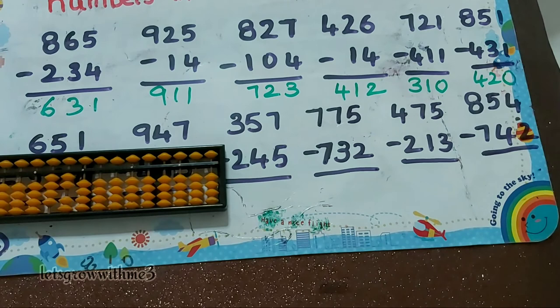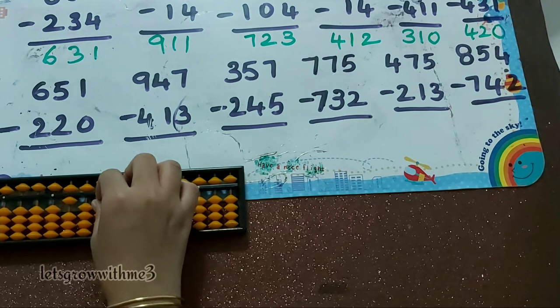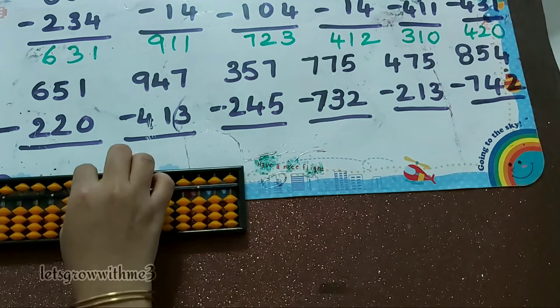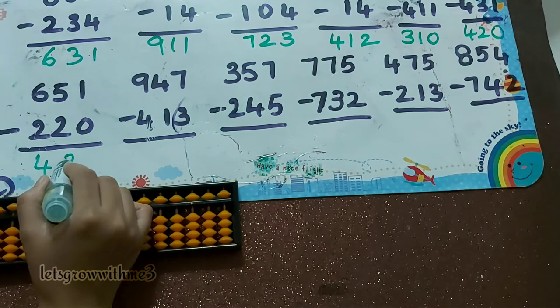Next one, 651 minus 230: minus 2, minus 5 plus 3. Minus 5 plus 3, 0. So the answer is 421.